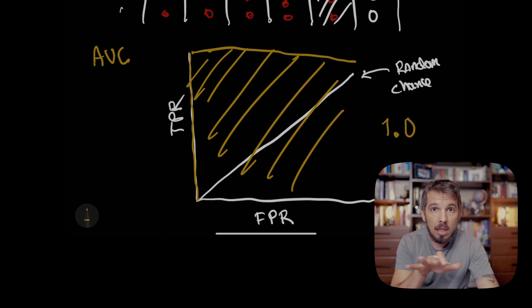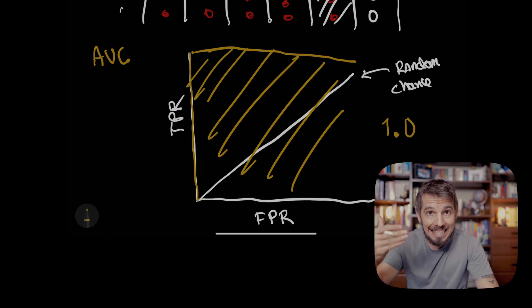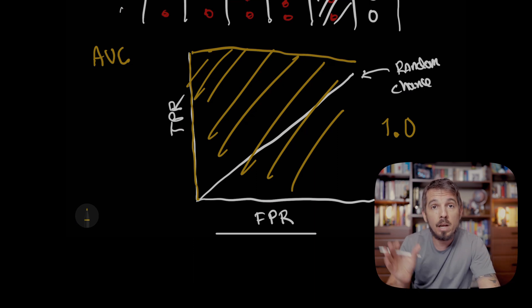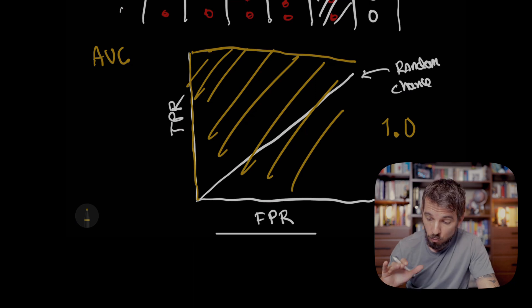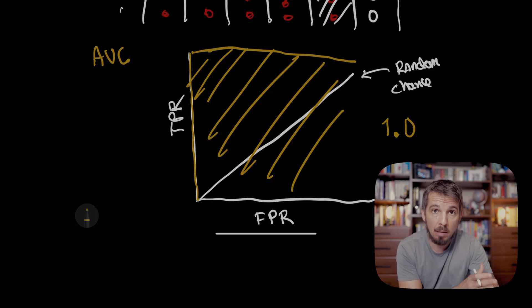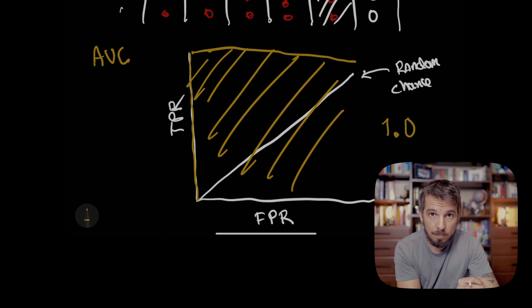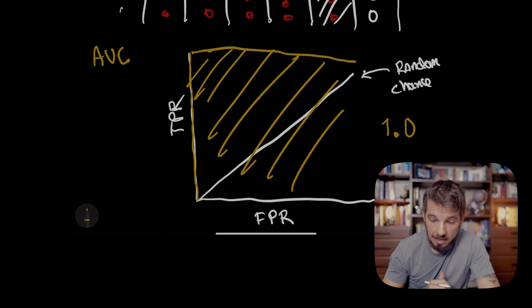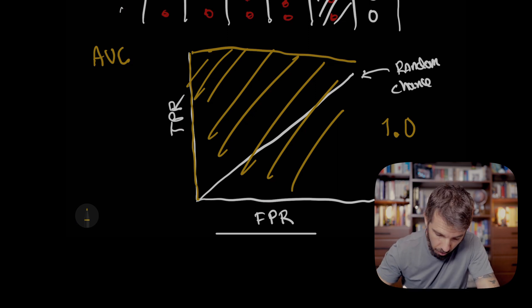If we get an AUC close to 1.0, that means our model is very good at telling whether a sample comes from the training set or the test set — and that means we have a problem with the distribution of both sets. On the other hand, if the ROC curve is very close to the diagonal, we'll get an AUC close to 0.5, meaning our model is essentially making random decisions. That means it cannot tell training samples from test samples — and that's a good thing. If the model can't tell the samples apart, both sets come from the same distribution.